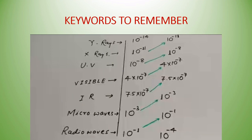Key wavelength values to remember: radio waves 10⁻¹ to 10⁻⁴ meters; microwaves 10⁻³ meters; infrared up to 10³; visible light 7.5×10⁻⁷ to 4×10⁻⁷ meters; ultraviolet 4×10⁻⁷ to 10⁻⁸ meters; X-rays 10⁻⁸ to 10⁻¹¹ meters; gamma rays 10⁻¹¹ to 10⁻¹⁴ meters.